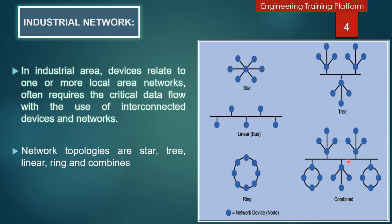In a combined topology, ring topologies, tree topologies, and others are all connected on the same line. Some networks allow all of these topologies, while other networks are more limited in the type of topologies available. In industrial areas, devices connected to one or more local area networks often require critical data flow using interconnected devices and networks.